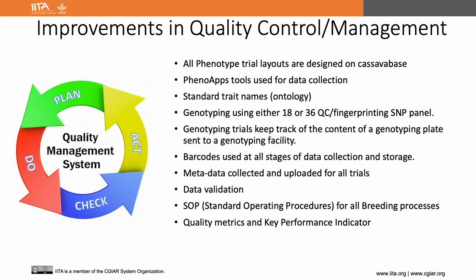Now we move on to quality improvement using CassavaBase. The quality management mainly deals with planning, quality control, quality assurance, and improvement. It's all about identifying any mishap or error that needs to be corrected, and after identifying it, we need to act and fine-tune the process to prevent those errors in future. These are the different quality control measures we undertake to improve quality, and most of them are directly linked with CassavaBase usage.